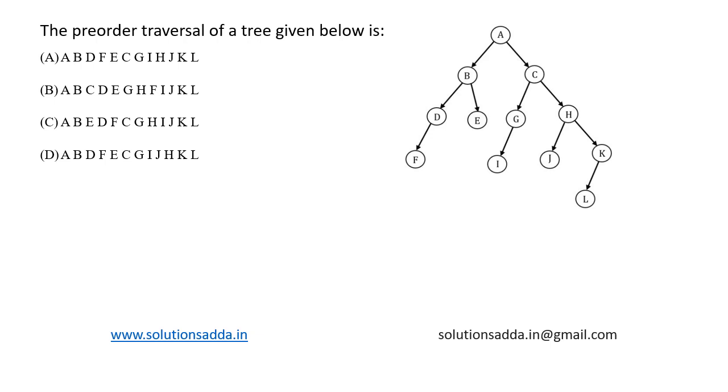This is a question from data structures: the pre-order traversal of the tree given below is what? First of all, what is pre-order traversal? There are three traversal techniques in tree: in-order, pre-order, and post-order.